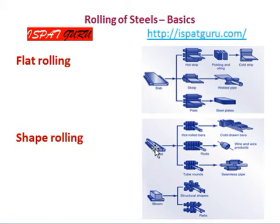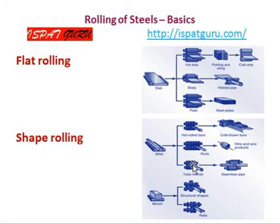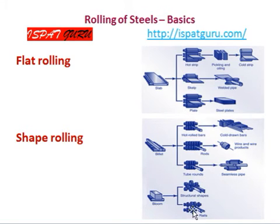In the case of shape mill rolling, the starting materials are either blooms or billets. Billets are used for smaller sections and blooms are used for bigger sections. Billets are used for rod bars which can be further drawn as drawn bars. They can be rolled as wire rod, which can be drawn as wires and wire products. They can be produced as tube rolling in the form of seamless tube, or rolled as sections such as I-beams, or rolled as rails.